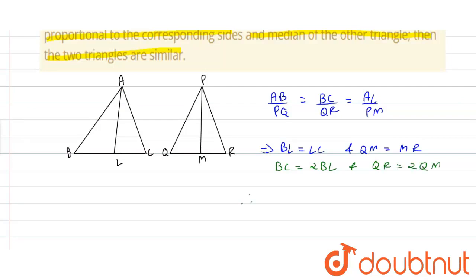Therefore AB upon PQ is equal to 2BL upon 2QM is equal to AL upon PM.